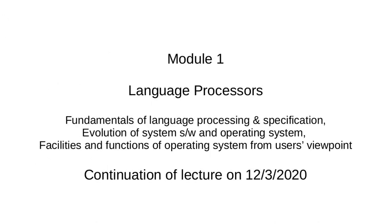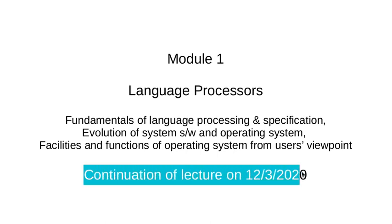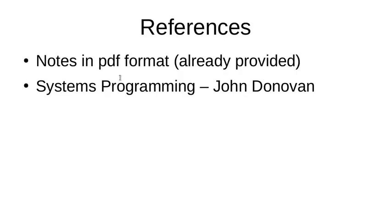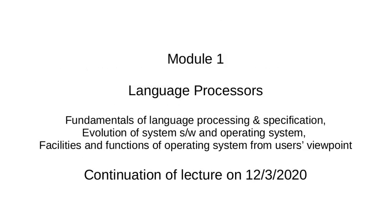At any point in the discussion, if you wish to review the content, you can pause the video, go through the slide, and continue. With this, we come to the end of module one. This video is a continuation of the lecture from 12th March and covers the remaining part of module one. The next lecture will begin with module two. For references, you can go through the notes already provided, and there is a systems programming book by John Donovan that you can also refer to. For any queries, you can always reach out by email.